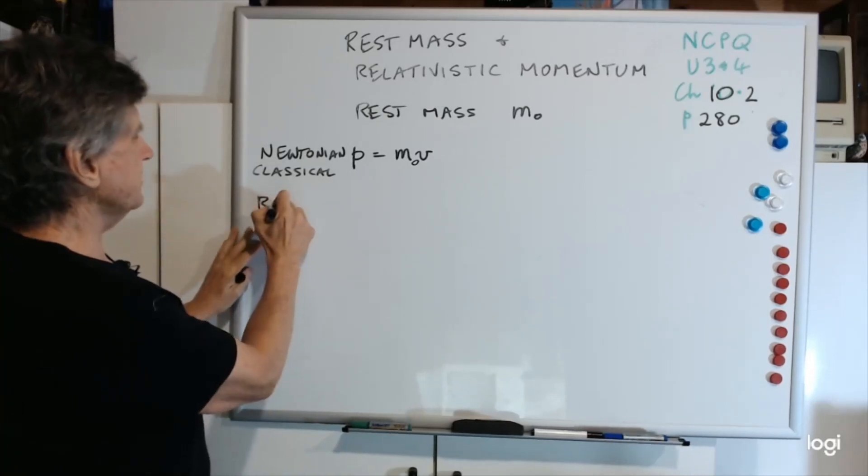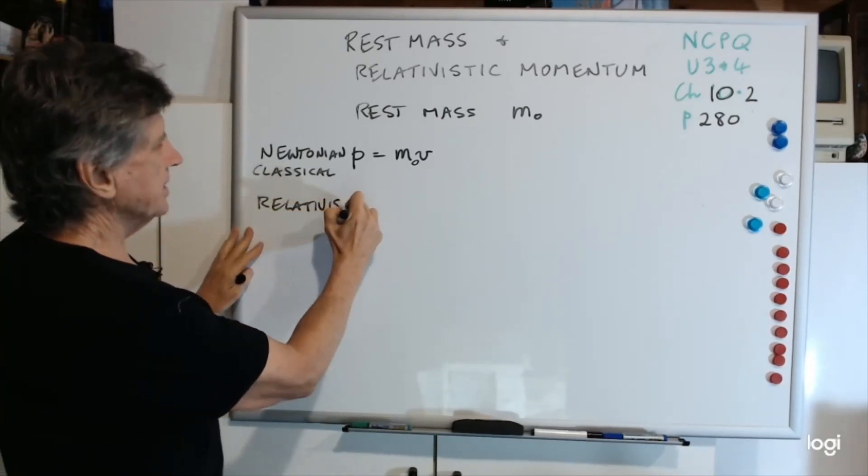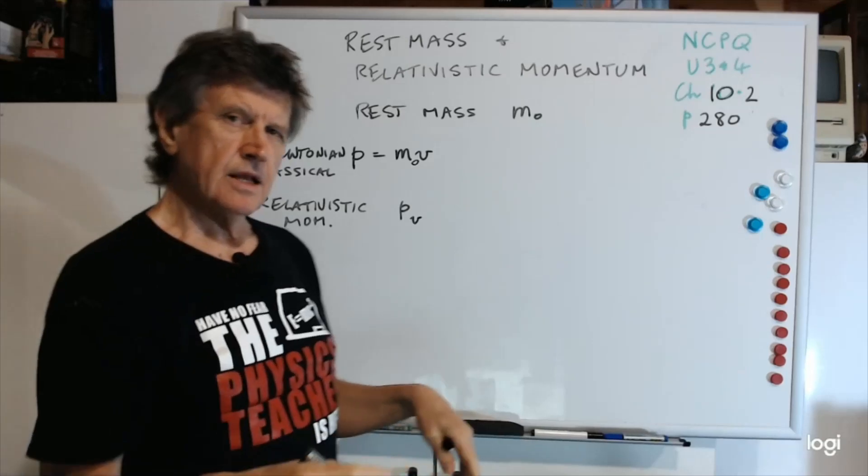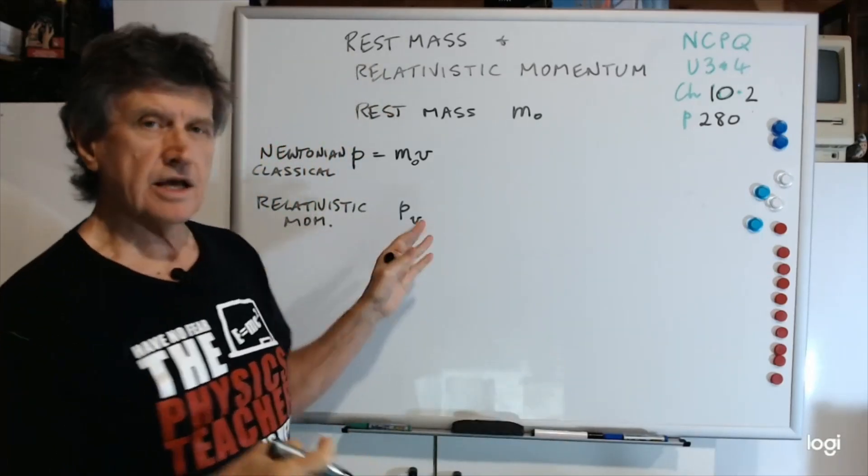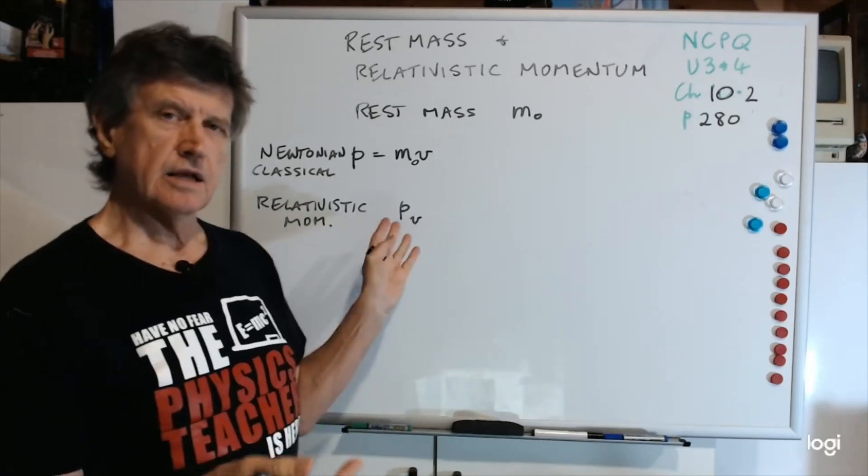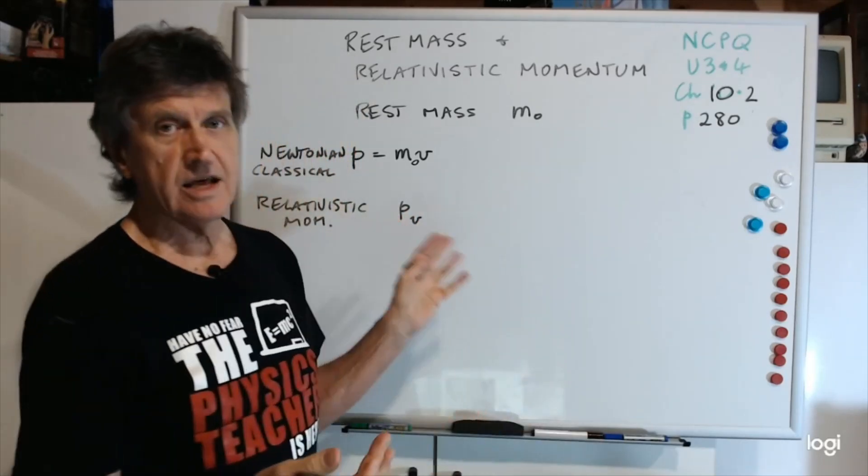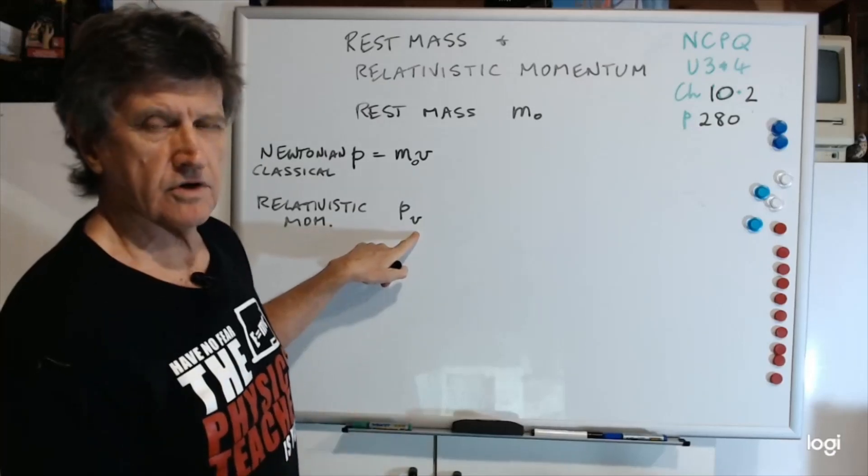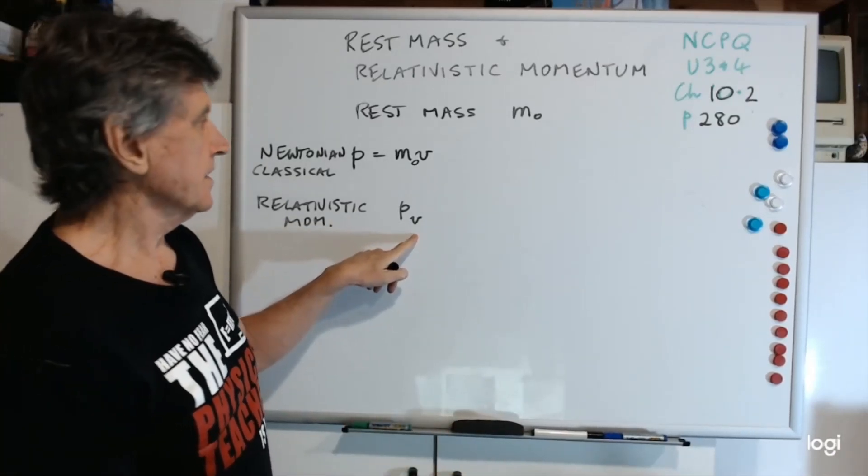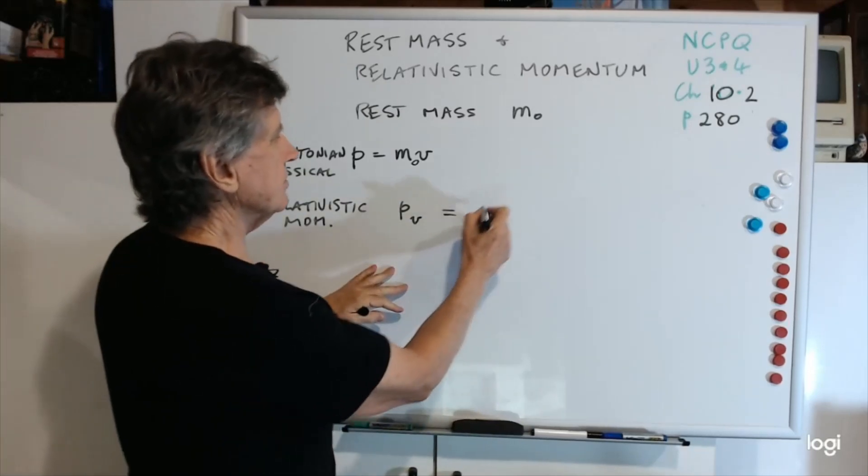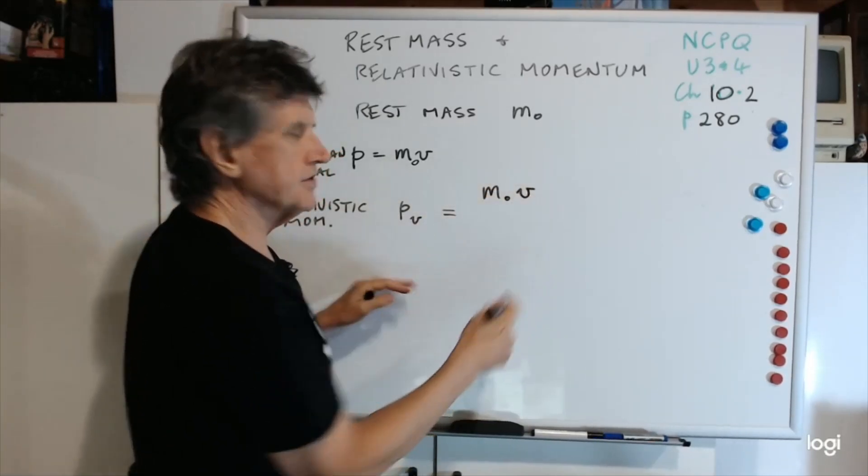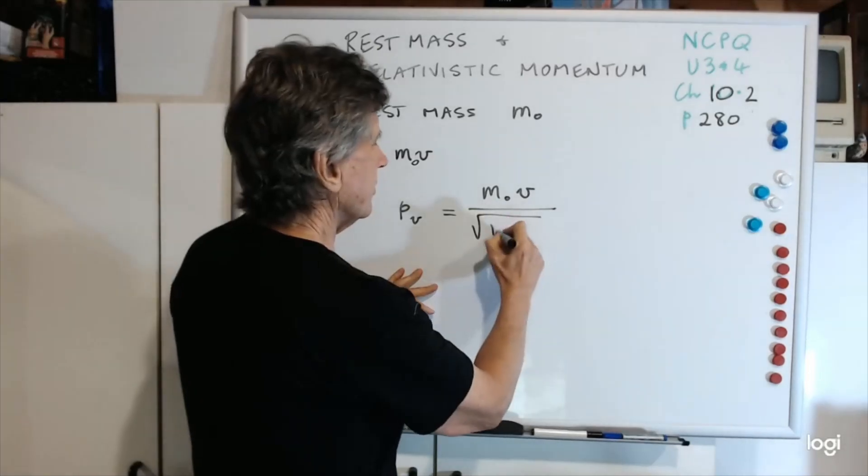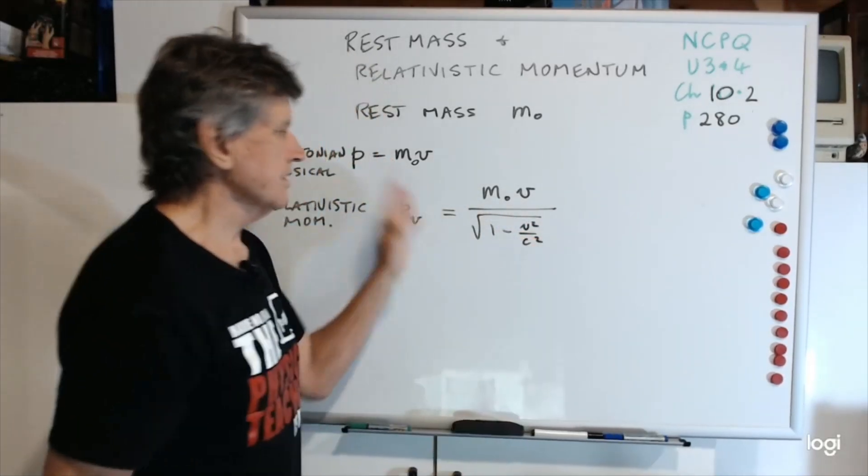Now the relativistic momentum is p and it's got a subscript v. We're never quite sure why they've chosen v as the subscript. The syllabus uses it and we'll stick to it. I would imagine it means that the momentum travelling at a high velocity, a relativistic velocity. Now that's just equal to m0v, which is just your ordinary Newtonian momentum, divided by 1 minus v squared on c squared. So there's the two formulas.